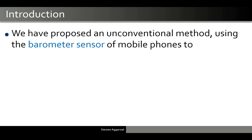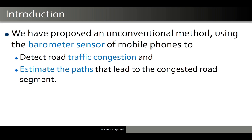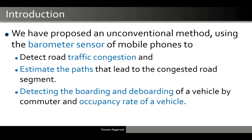We have proposed an unconventional method using the barometer sensor of mobile phones to detect road traffic congestion and estimate the path that led to the congested road segment. We have also proposed a methodology for detecting the boarding and de-boarding of a vehicle by commuters and to determine the occupancy rate of a vehicle.